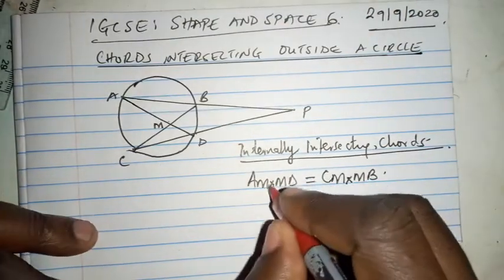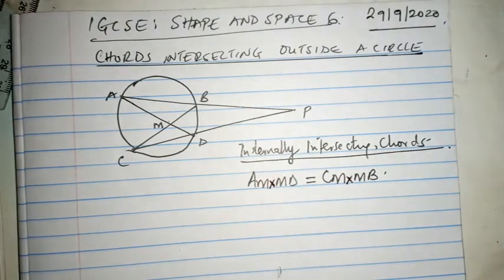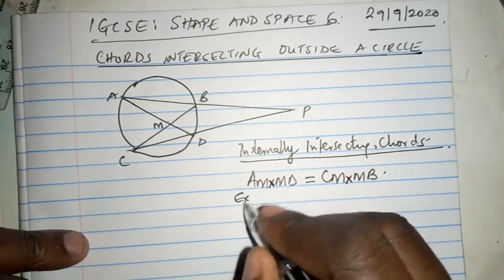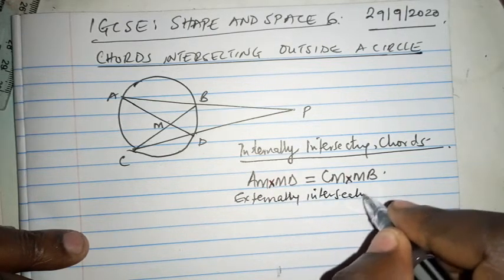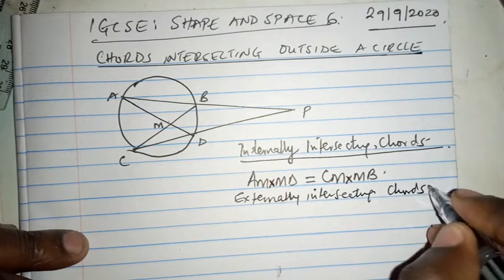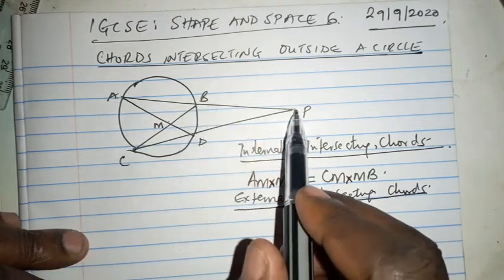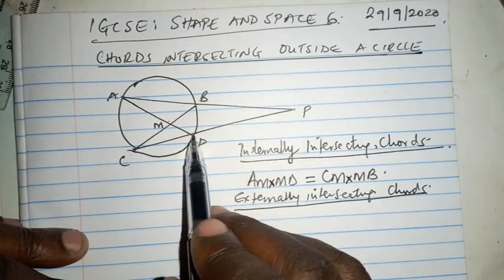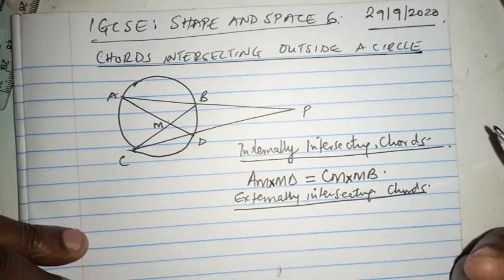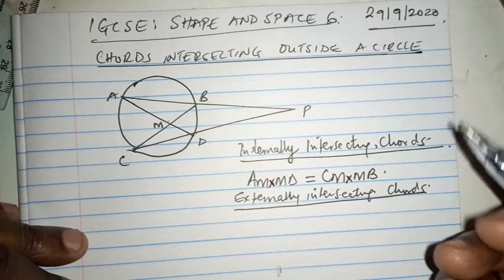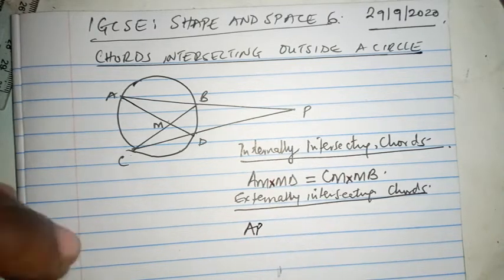Now, externally intersecting chords. This is the purpose of this video. We are talking about chord AP produced to P, and chord CD produced to P. What happens is that if you want to calculate externally intersecting chords, you take the whole line AP multiplied by...